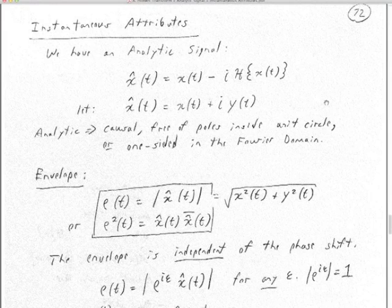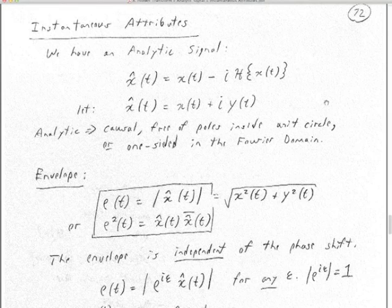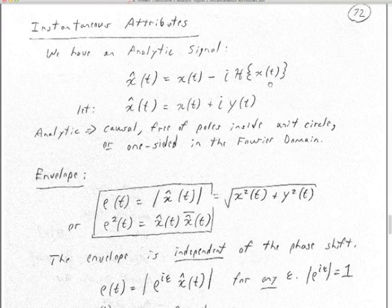All this stuff is available in OpendTect if you want to play with it. Now let's look at instantaneous attributes. We've got our analytic signal: the real data sitting on the real part, and minus the Hilbert transform of the real data on the imaginary part. We'll call this imaginary part y. So our analytic signal x-hat equals x plus i·y of t — a complex trace.